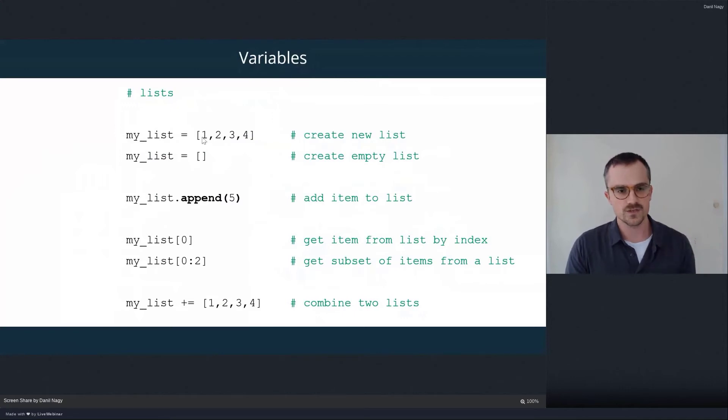And in these square brackets, we put all the data we want to store inside the variable separated by commas. So this list called my_list will actually contain four pieces of data. These are four integers, one, two, three, and four. We can also create an empty list just by supplying the empty brackets.